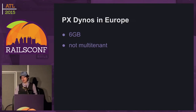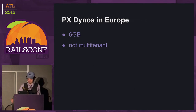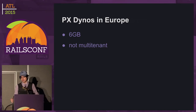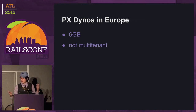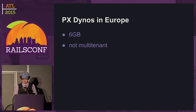For those of you dealing with compliance or in Europe, we announced PX Dynos in Europe. PX Dynos are the 6GB instances that run by themselves — they're not multi-tenant, so you don't have to deal with noisy neighbor problems. You get much more consistent performance. This is great for anyone dealing with things in Europe who wants to scale out web servers with a master process, load-balance per process, and get more workers.